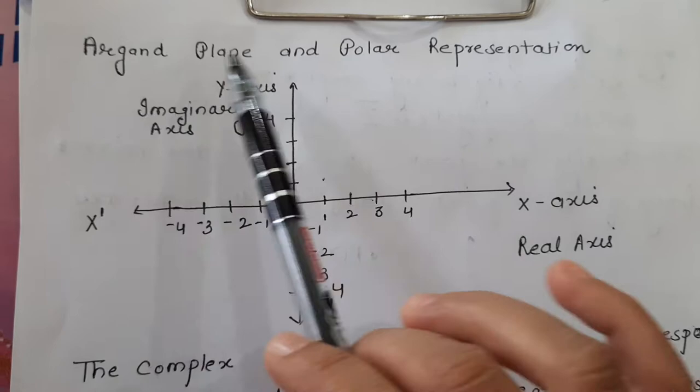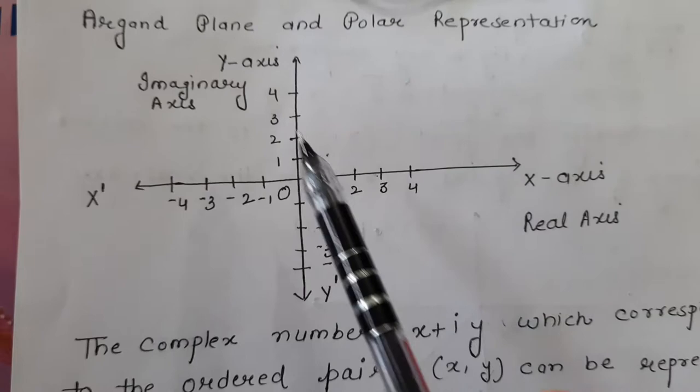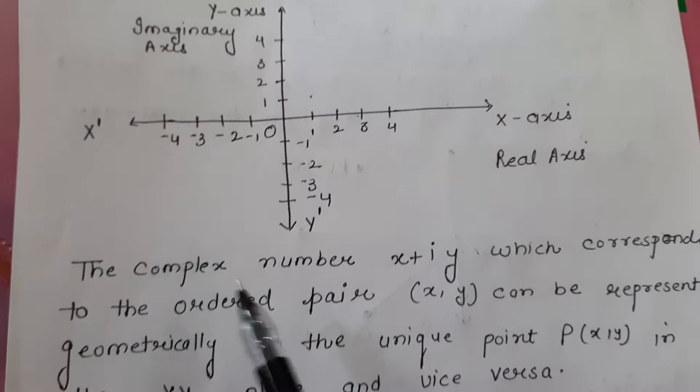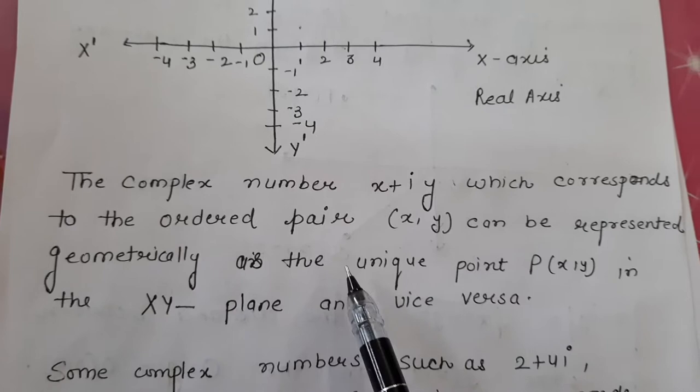In this video I am going to discuss the Argand plane and the polar representation of complex numbers. Here I have plotted the set of mutually perpendicular axes — this is the x-axis and this is the y-axis. Here x is positive, here x is negative, above the origin y is positive, and below y is negative. The complex number x plus iota y, which corresponds to the ordered pair (x, y), can be represented geometrically as the unique point (x, y) in the x-y plane.